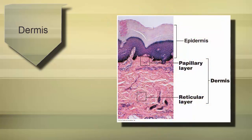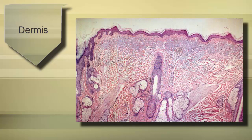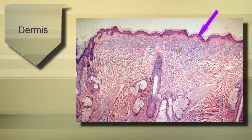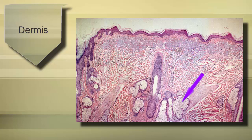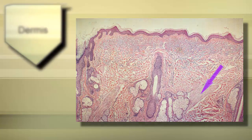Here's the figure from your textbook showing a histological slide of the skin with parts of the dermis labeled. This slide shows the epidermis very nicely with the keratinized stratum corneum. Just deep to that is the papillary layer of the dermis, and then even deeper is the reticular layer. Some structures visible include a hair follicle, a sebaceous gland, and smooth muscle associated with hair follicles called the erector pili muscle.